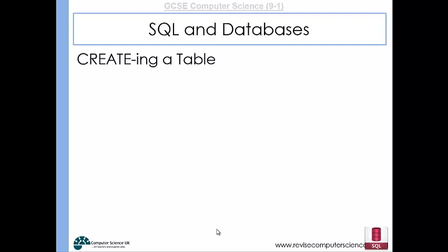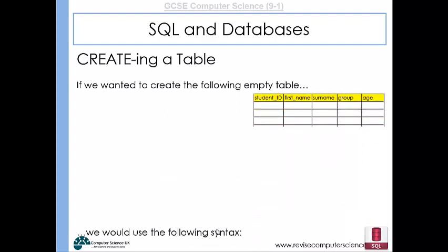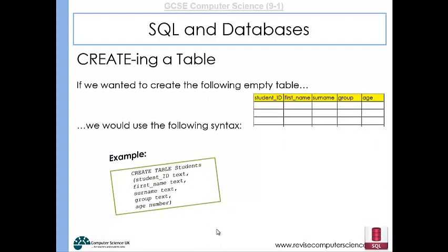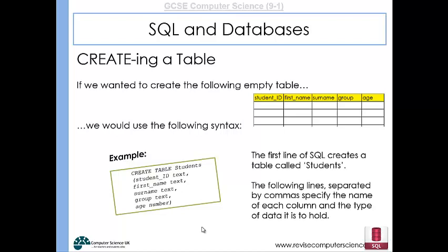To create a table inside our database, we use the following syntax: CREATE TABLE followed by the name of the table, then open brackets, and inside the brackets we have the name of each column along with the data type that the column is going to hold, separated by commas. As you can see in this example code, that results in a table with the name 'students' and columns: student ID, first name, surname, group, and age.